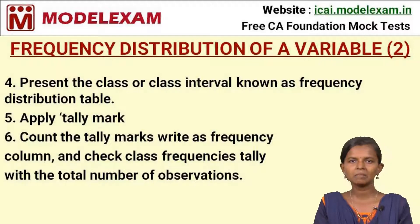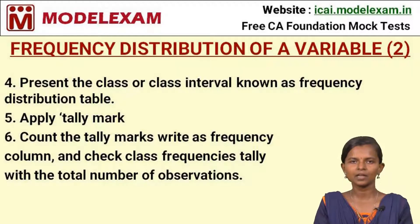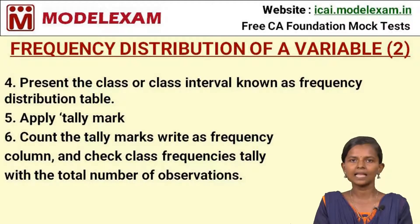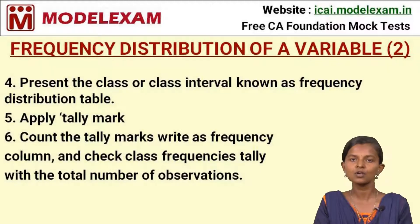Continuing the steps: after finding the range value, class length, and number of class intervals, the fourth step is to present the class intervals in a frequency distribution table. The fifth step is to apply tally marks for the data collected from the question. The sixth step is to count the tally marks and form a frequency column, which gives the total number of observations — this should be verified against the original data to confirm accuracy.